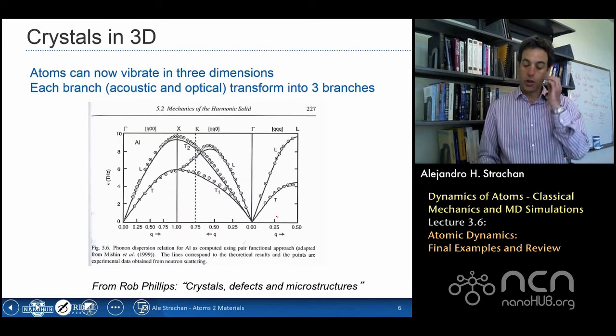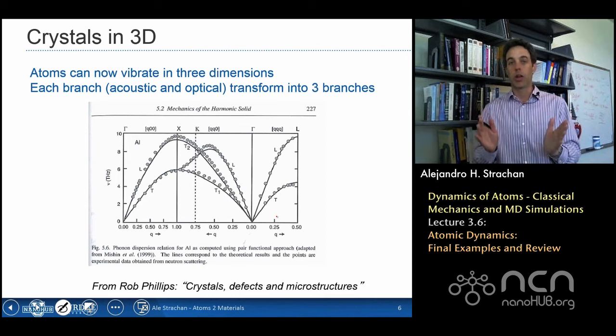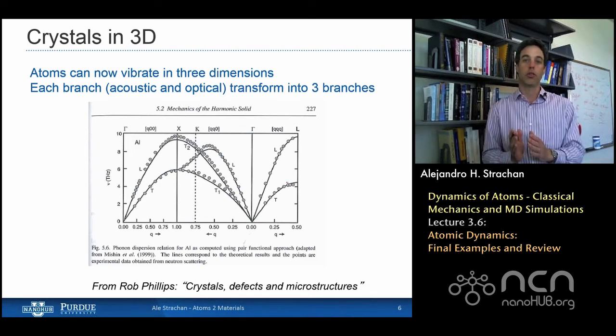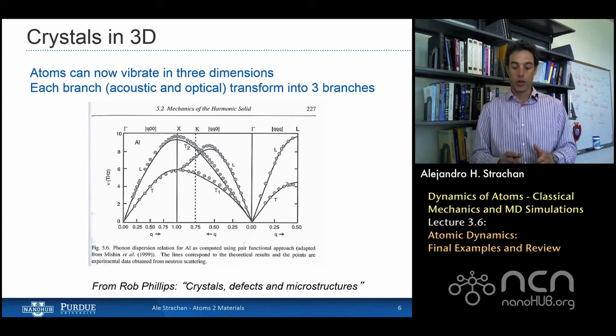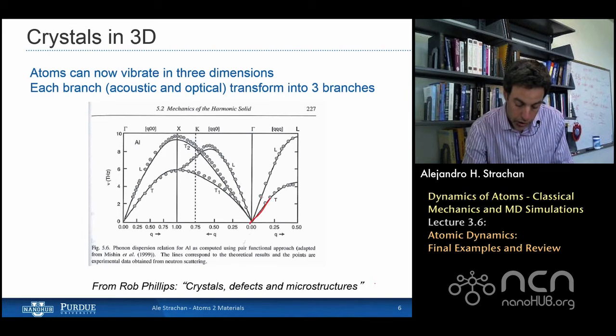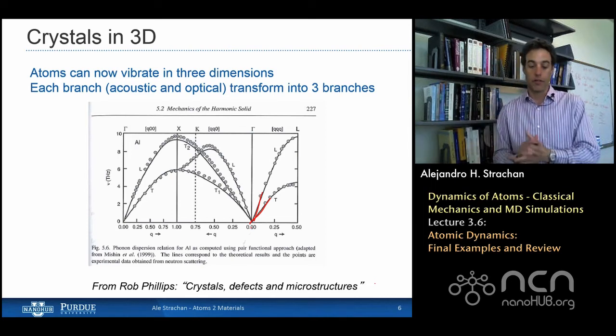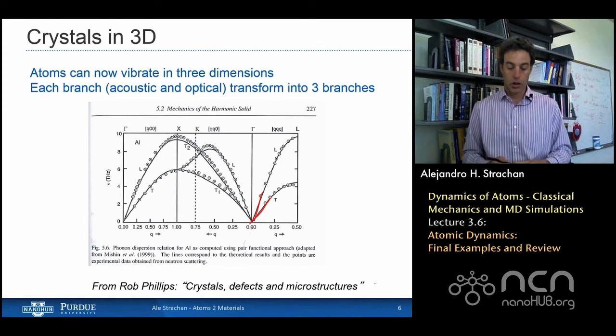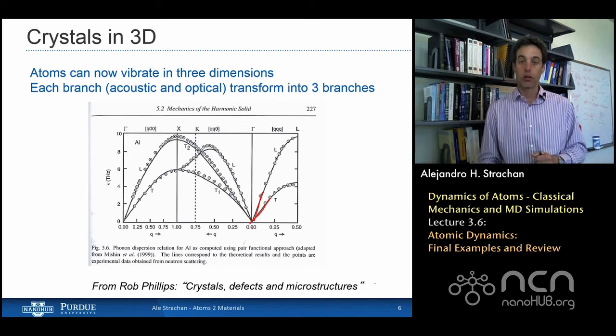Before doing that, this is an example of the dispersion curve for aluminum. Aluminum has a single atom in the unit cell, but it doesn't live in 1D, of course it lives in 3D, so you can see that there's multiple branches of the dispersion curve as you have longitudinal and transverse vibrations, and these longitudinal and transverse vibrations have different speeds of sound. Which are the initial slope of this dispersion curve that relates the frequency with the wave vector. So as you all know that initial slope will be the velocity of the waves traveling through the system. So enough about phonons and dispersions.